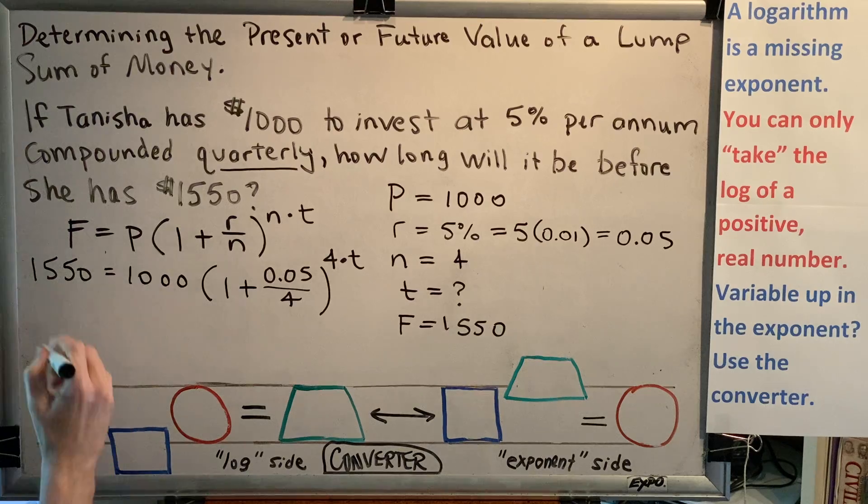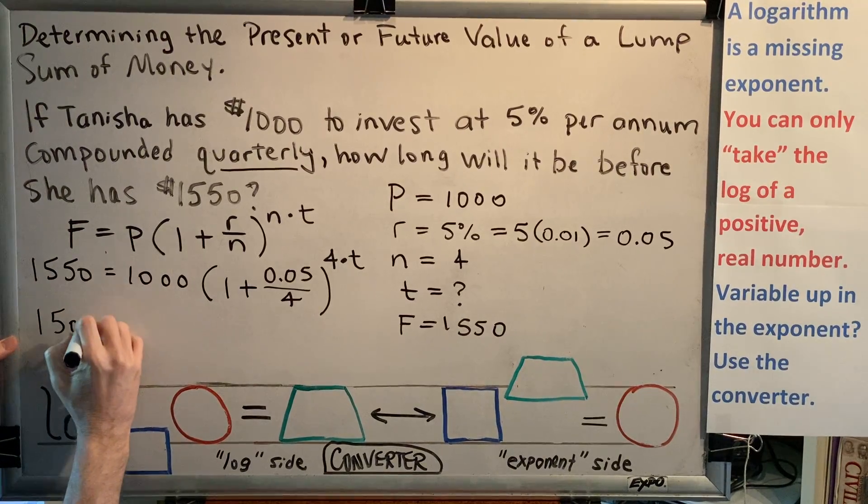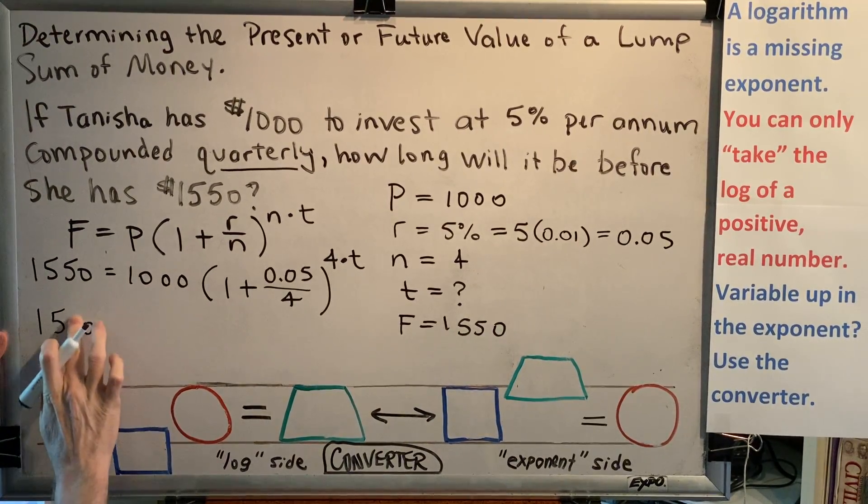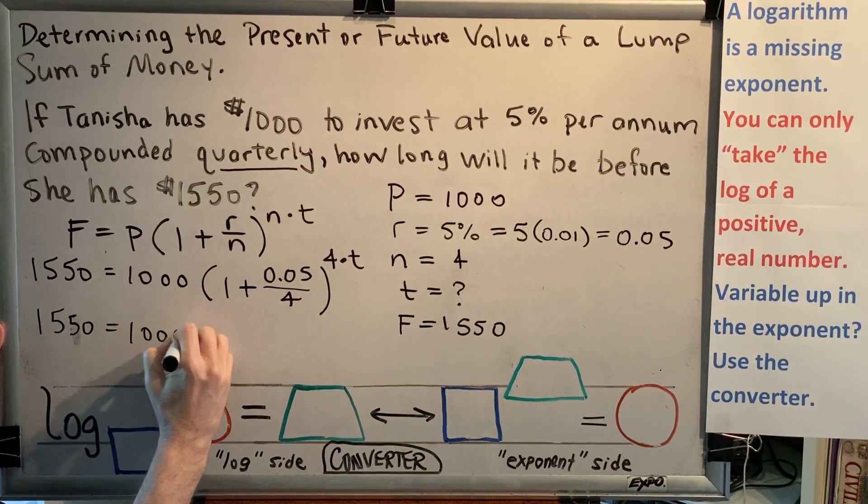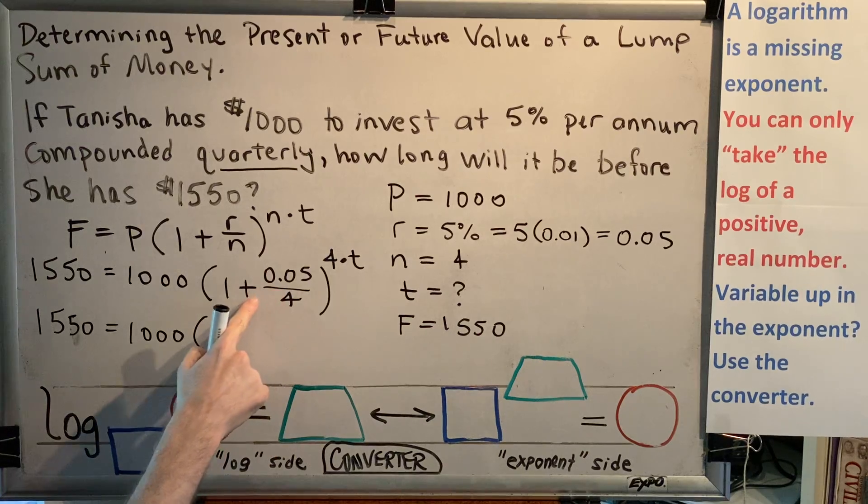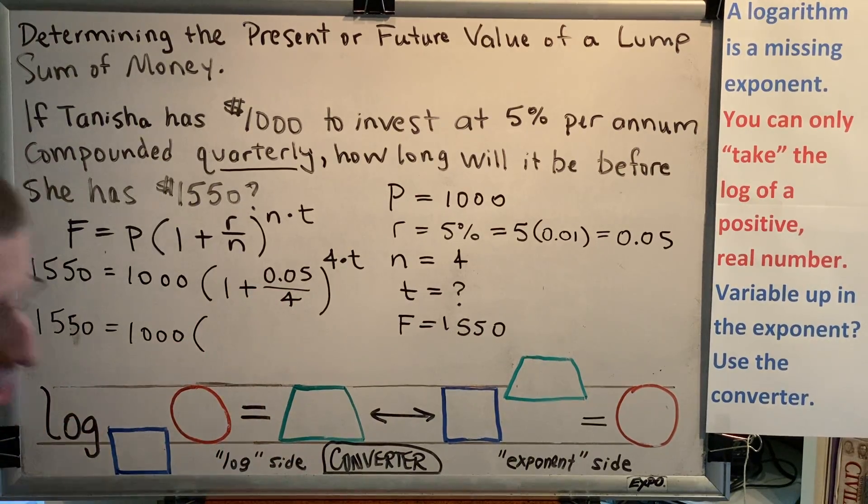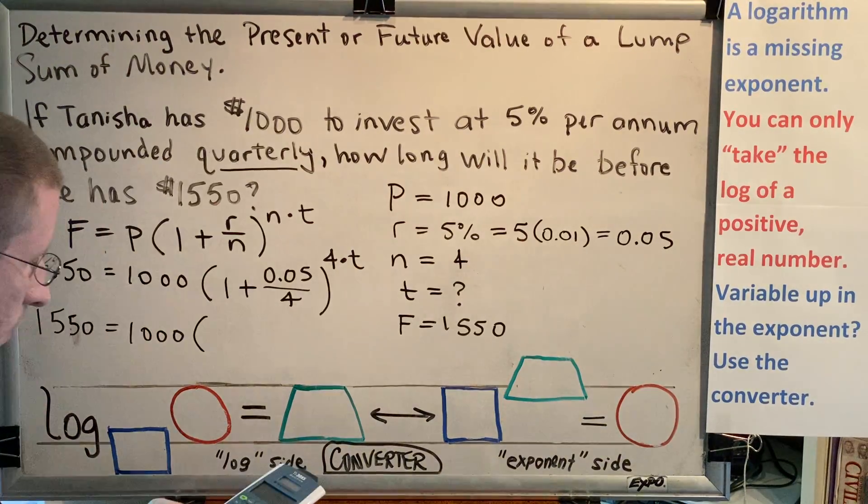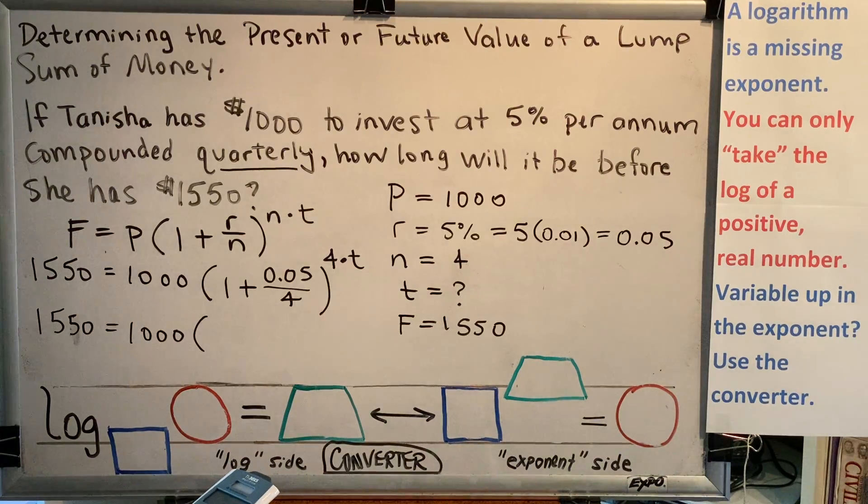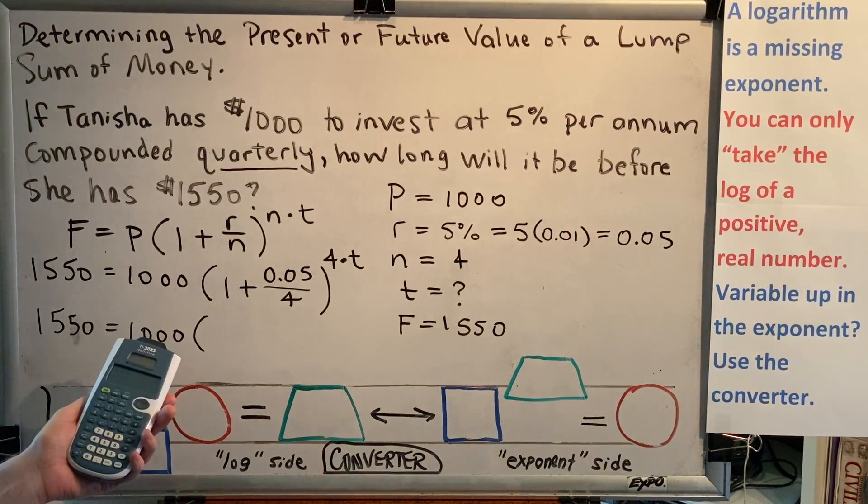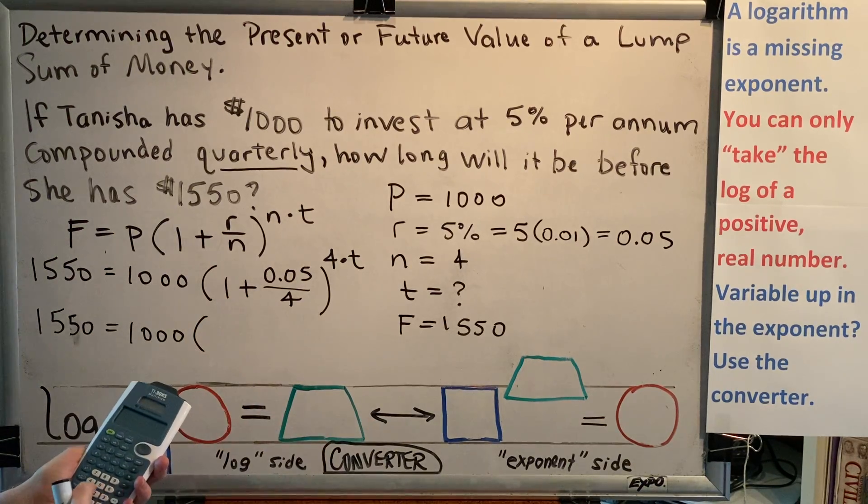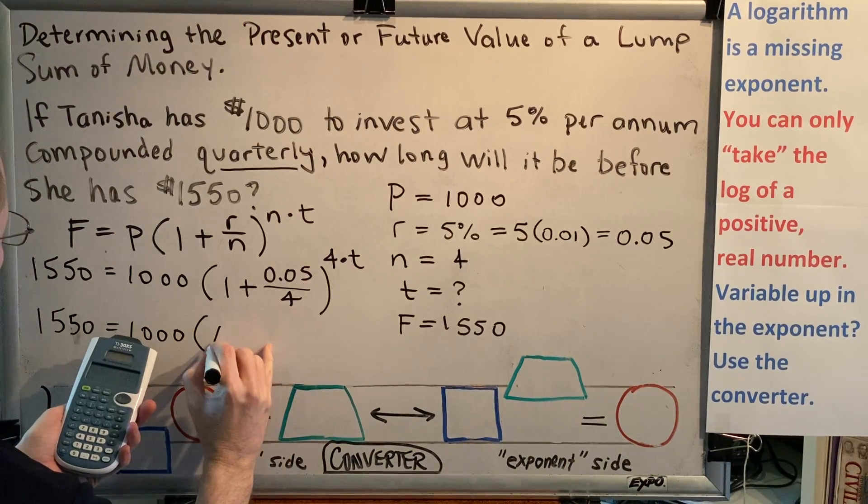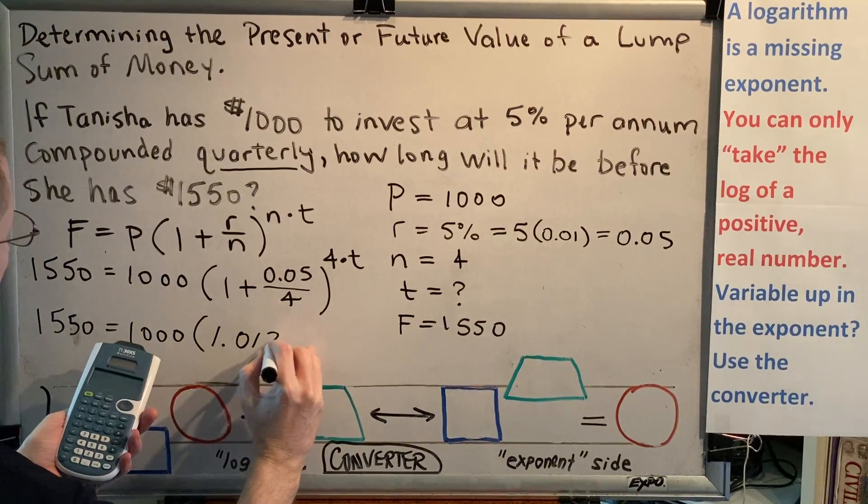This is the moment where we're going to get out our calculators, and we're going to do a little bit of calculator math here. Following order of operations, we need to work inside of our grouping symbol first. And division happens before addition. So we're going to take 0.05 and divide it by 4. That gives us 0.0125. Then we'll add 1. So this gives us 1.0125.